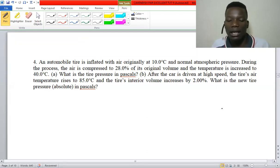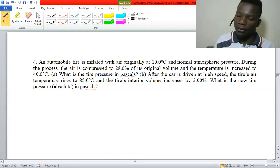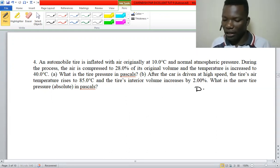The question says: an automobile tire is inflated with air originally at 10 degrees Celsius and normal atmospheric pressure. During the process, the air is compressed to 28 percent of its original volume and the temperature is increased to 40 degrees.